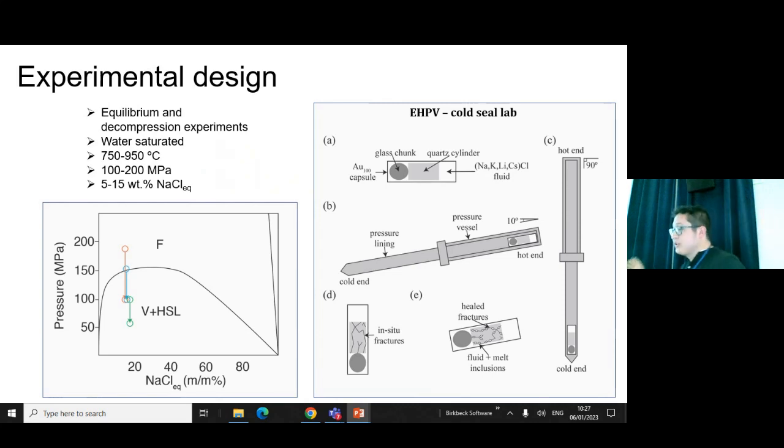This is just a schematic version of the pressure vessel. Basically in the upper part you have the capsule preparation. You have the glass chunk that I previously synthesized, we have the quartz cylinder, and also we have the chlorine fluids. These chlorine fluids are important, especially when we talk about metal transport, because they are key elements to, for example, mobilize copper. We tried to test if this was also the case for lithium.